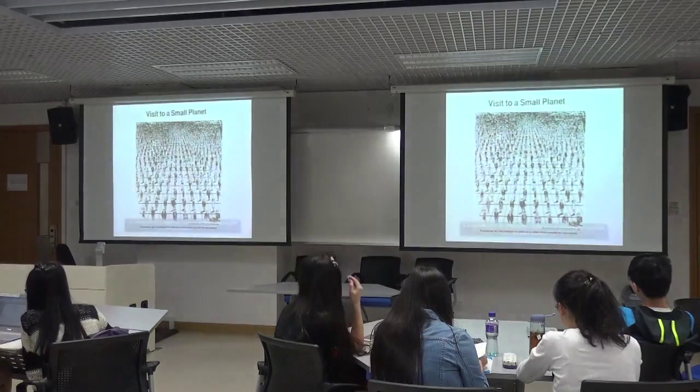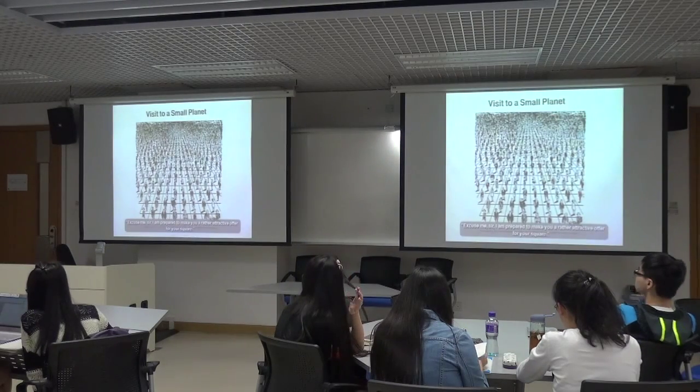We can smile at those numbers knowing they couldn't happen. There's a cartoon: 'Excuse me sir, but I am prepared to make you a rather attractive offer for your square.' The profound lesson is that zero population growth is going to happen. We can debate whether we like it or not, but it's absolutely certain — people could not live at that density. Therefore today's high birth rates will drop and today's low death rates will rise until they are equal, certainly within a time short compared to 780 years.